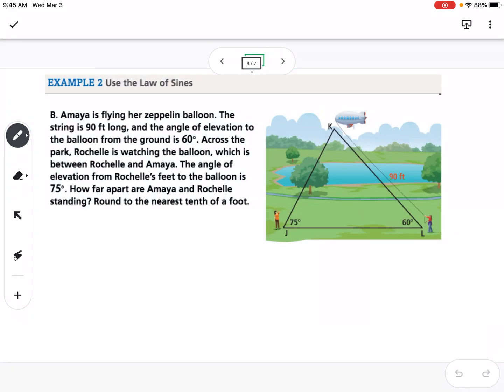Okay, so the next part of this, so this one we have angle, angle, side. So this is angle, angle, side. So we don't have to worry about the ambiguous case on this one like I'll talk about in a minute. Okay, so this says Amaya is flying her Zeppelin balloon. The string is 90 feet long and the angle of elevation to the balloon from the ground is 60 degrees. Across the park, Rochelle is watching the balloon, which is between Rochelle and Amaya. The angle of elevation from Rochelle's feet to the balloon is 75 degrees. How far apart are Amaya and Rochelle standing? So I'm going to say this is little k. That's what we're finding. Round to the nearest tenth of a foot.